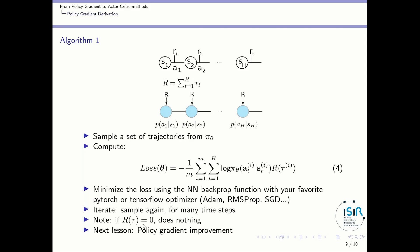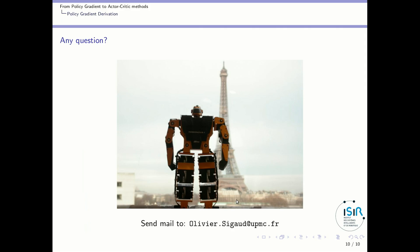A quick note: if the reward along a particular trajectory is null, this gradient does nothing because the term is zero, your loss is zero, and nothing happens. It's important to consider that with sparse rewards, the policy gradient may not work if you don't find any reward. That's the first algorithm, and in the next videos I will present improvements over this simple algorithm.